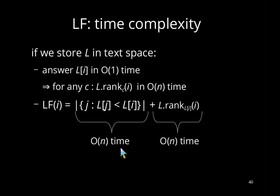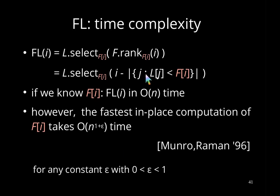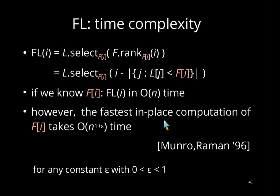Unfortunately, this does not work directly with the FL mapping, because we need the i-th position of F. Computing FL requires selecting the i-th smallest character in L, and the best known in-place solution takes O(N^(1+ε)) time. This is actually the source of the time bounds from Kroshmar and others, since they need this time multiplied by N for restoring the text.